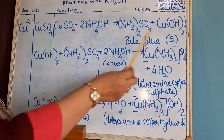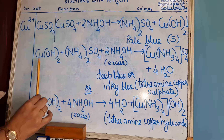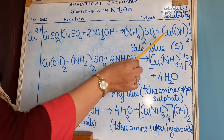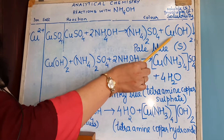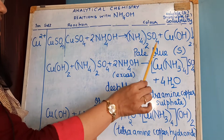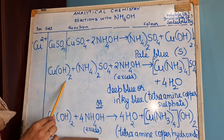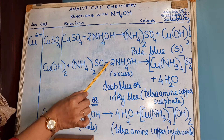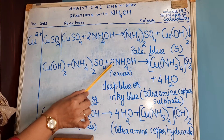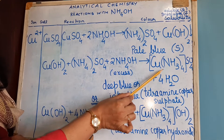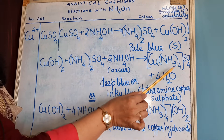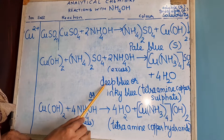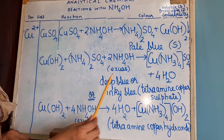Since it is soluble you are having two equations here. The products of the first equation — ammonium sulphate and copper hydroxide — are formed, and then you are adding excess of ammonium hydroxide. So you write the products: copper hydroxide plus ammonium sulphate, and since you are using excess ammonium hydroxide, you add two NH4OH excess. Here you get a complex salt — tetraamine copper sulphate — and the colour of this complex is deep blue or inky blue, and it is a soluble complex.